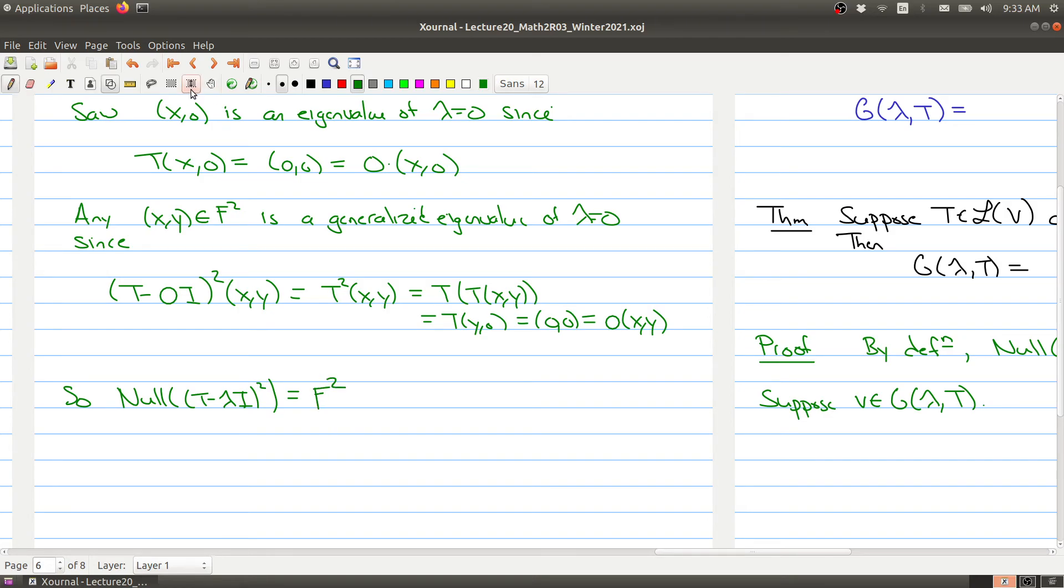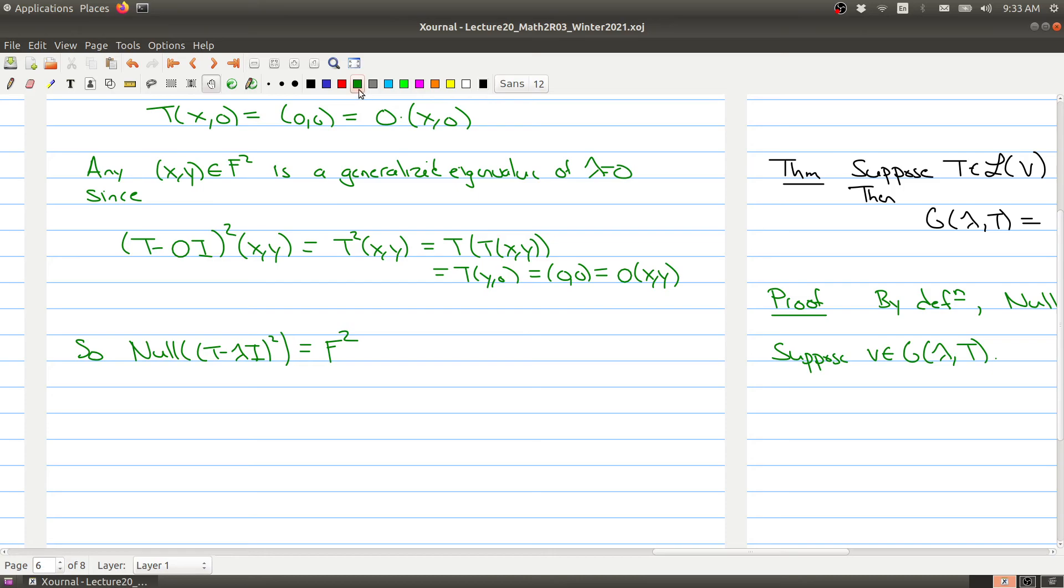That means that the null space of the operator (T - λI)² is actually all of F², all of F².